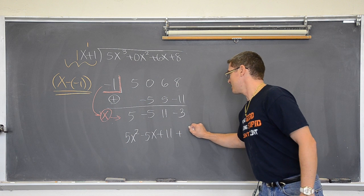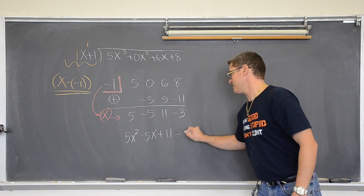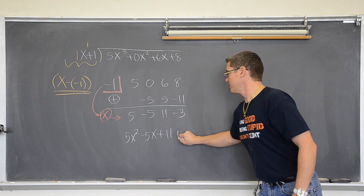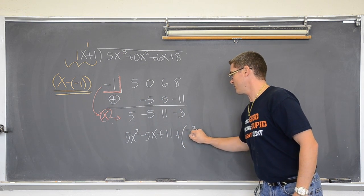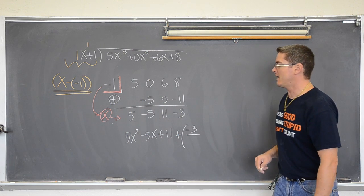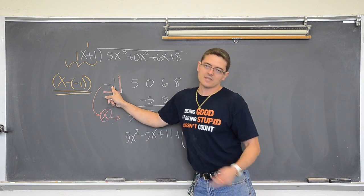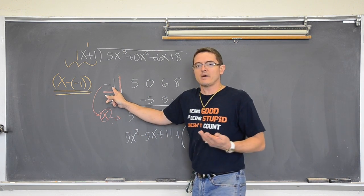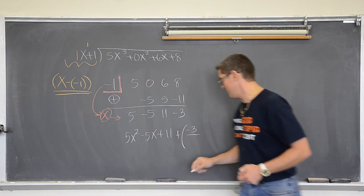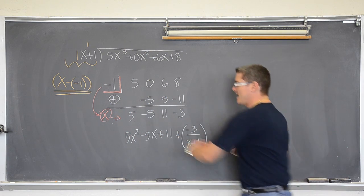So plus, excuse me, minus, well you can write that, plus negative three, the remainder over what you were dividing by, which was not, well we synthetically divided by negative one, but the original binomial was x plus one. Voila! You would get the same answer if you did long division, but that was so much quicker. I love it!